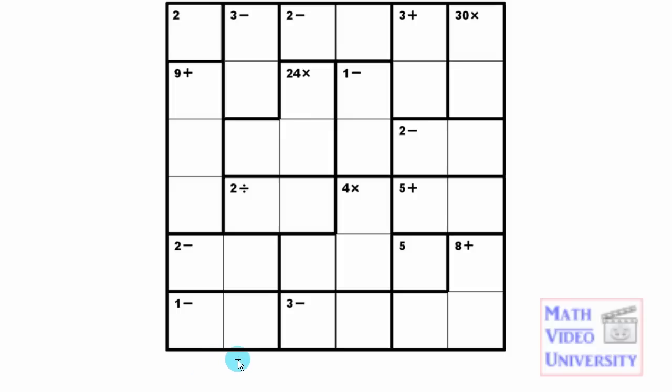Before we start the actual solution, what I always suggest people do is look down here and draw the numbers that are possible. I call these the raw materials, and since this is a 6x6 KenKen, then the only numbers that you can use are the numbers 1 through 6.